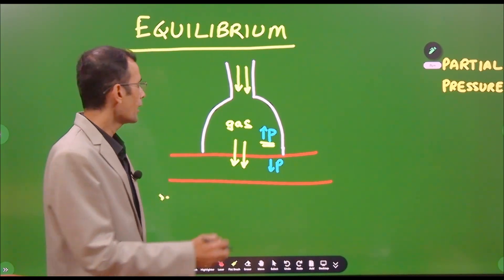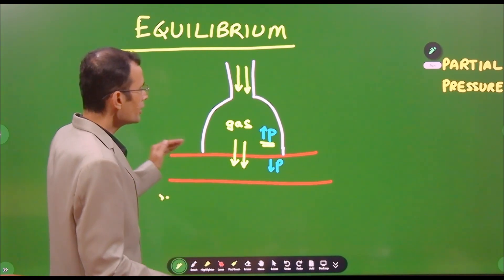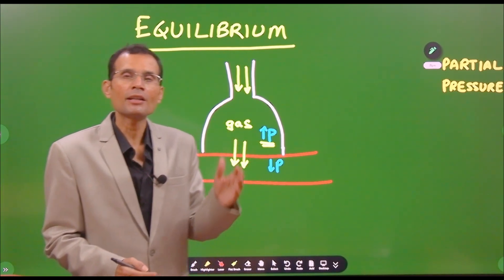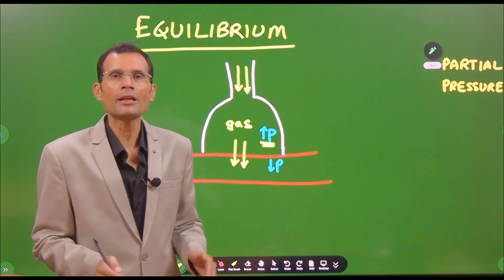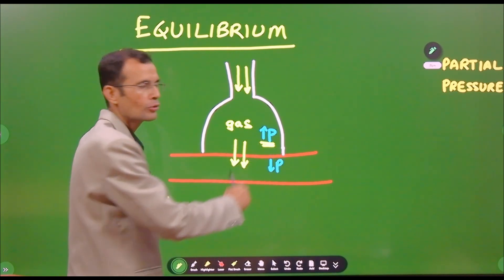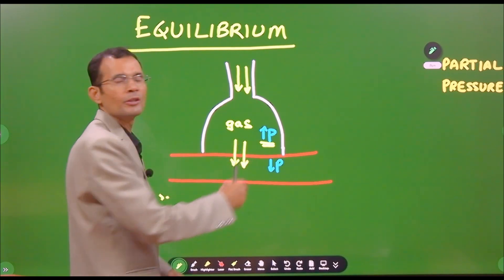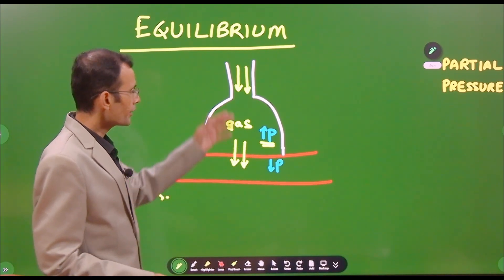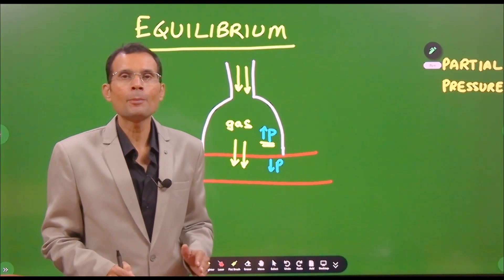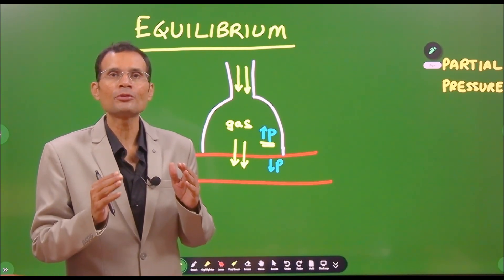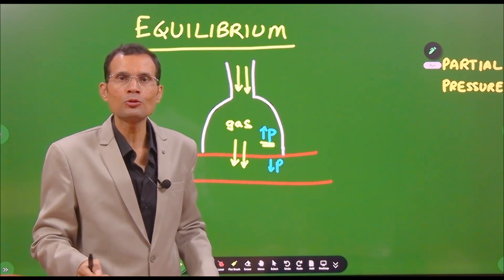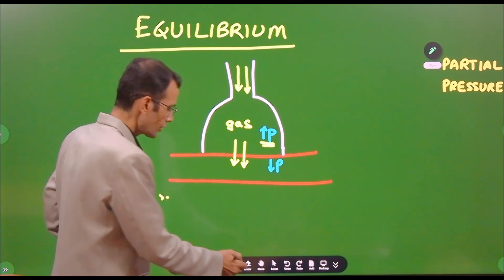When we say diffusion from alveolus to the blood, we mean the gas crosses the respiratory membrane — the alveolo-capillary membrane — which has components of the alveolar wall and the wall of the pulmonary vessel. The gas has to cross all those layers to reach the other side. We are now talking about the diffusing capacity of the respiratory membrane.